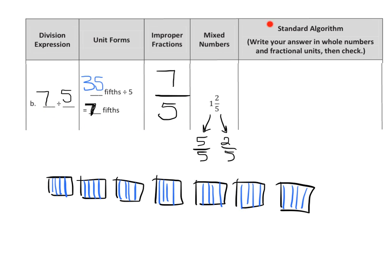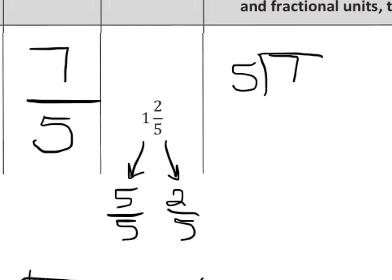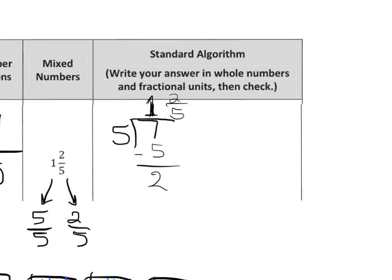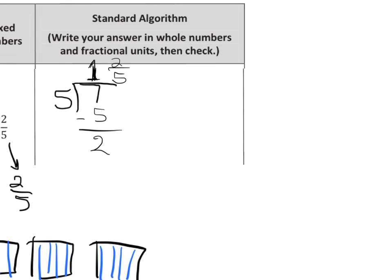So let's do that. That's going to be 7 divided by 5. I'm going to zoom in a little bit. 5 goes into 7 one whole time. We subtract and we have 2 left over. So our fraction is 1 whole and 2 fifths. Now in order to check it, they want us to show that 5 times 1 and 2 fifths is equal to 7.